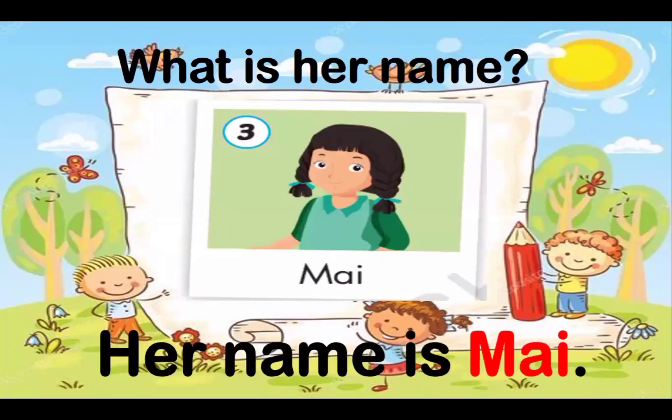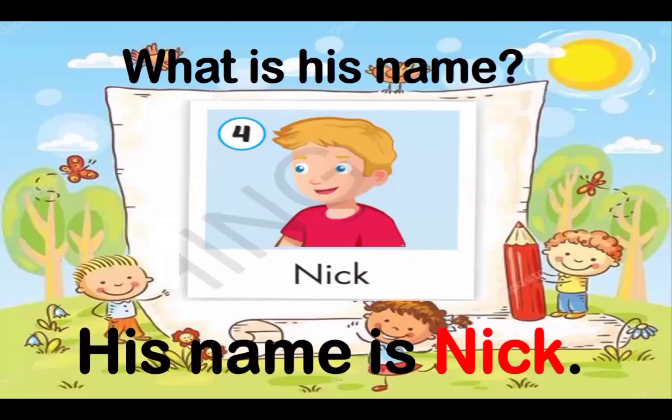Number three: what is her name? Her name is Mai. Okay, number four: what is his name? His name is Nick. Awesome. Well done.